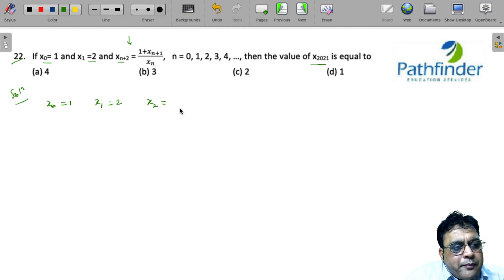x₂ can be calculated as 1 plus x₁ upon x₀, which is 1 plus 2 upon 1, that is 3. So x₂ is 3.